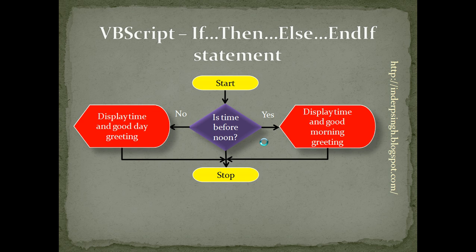Sometimes, a more realistic case is that if the condition is true, we want some actions to take place, and if the condition is false, we want some other actions to take place. In this flowchart: start, check the current time — is the time before noon? If it is before noon, it displays the time and a good morning greeting. If the time is not before noon, it displays the time and gives a good day greeting. Let's see this particular script.